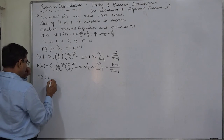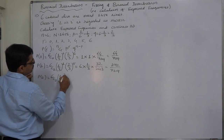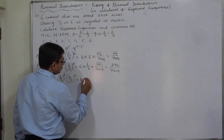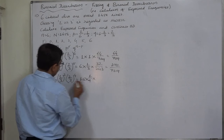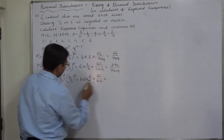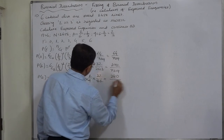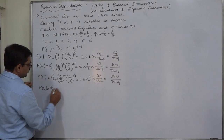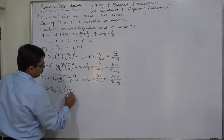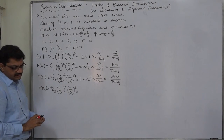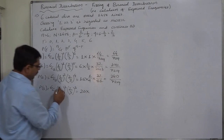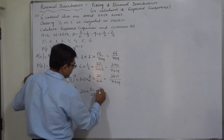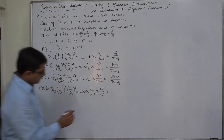P(2) equals 6C2 into (1/3)^2 into (2/3)^4. 6C2 is 15, (1/3)^2 is 1/9, and (2/3)^4 is 16 by 81. So 15 into 16 gives 240, and 9 into 81 gives 729. Therefore P(2) = 240 by 729. P(3) equals 6C3 into (1/3)^3 into (2/3)^3. 6C3 is 20, (1/3)^3 is 1/27, and (2/3)^3 is 8 by 27. So 20 into 8 gives 160, and 27 into 27 gives 729. P(3) = 160 by 729.